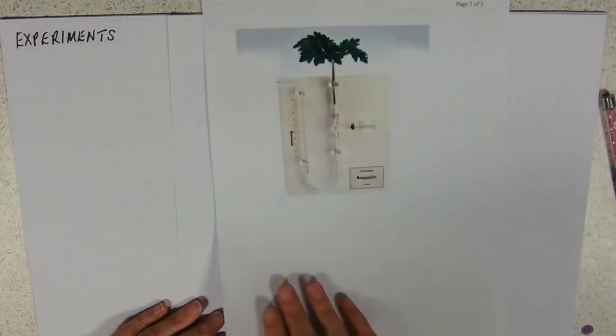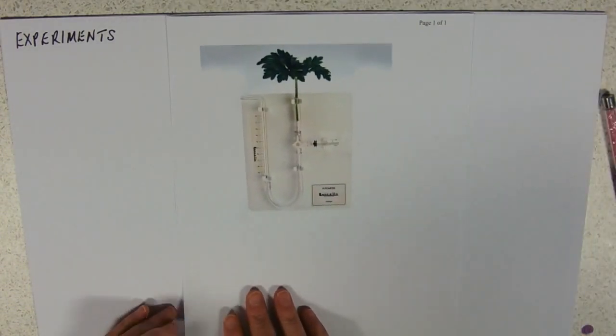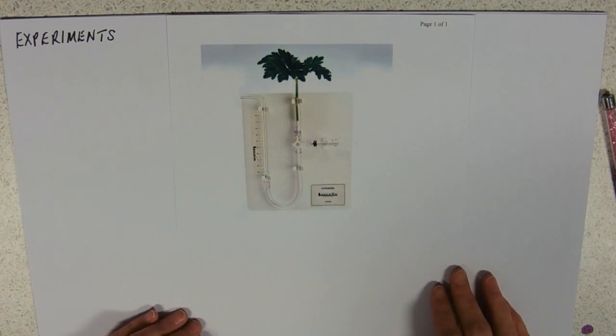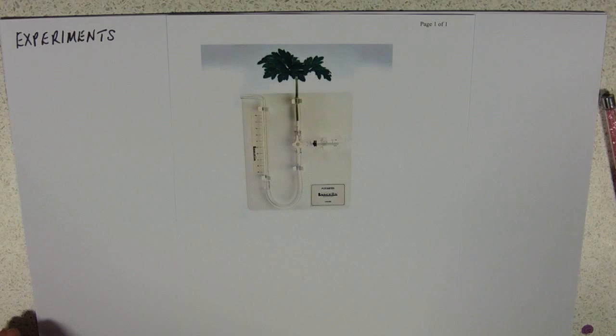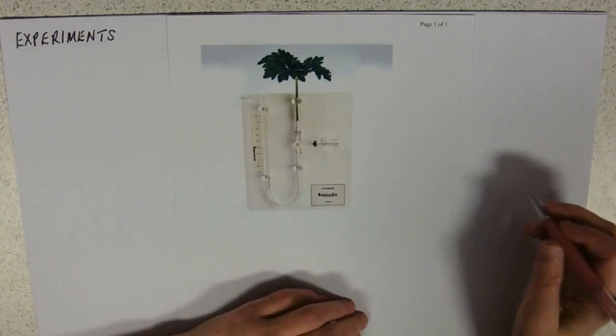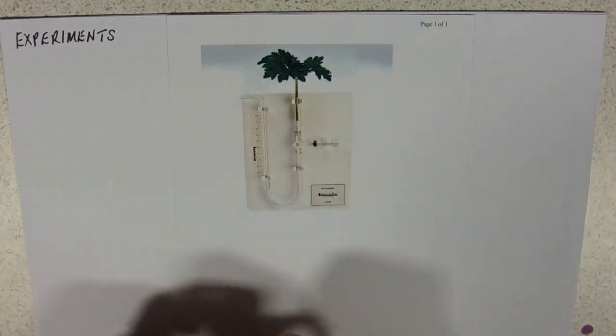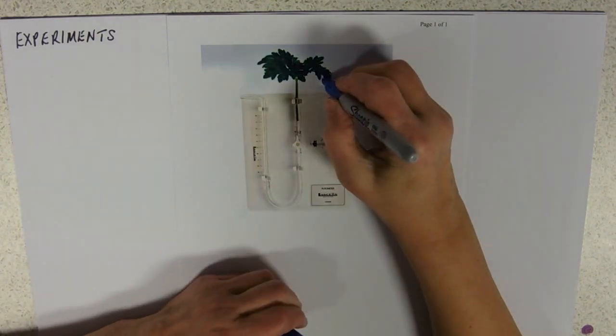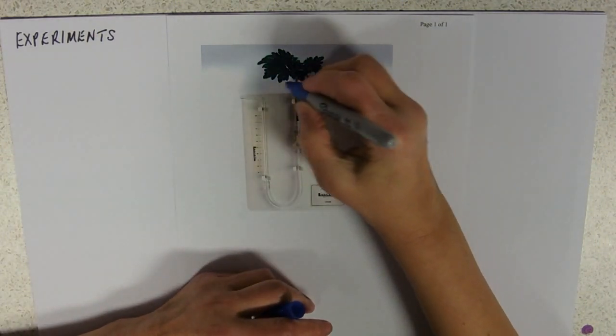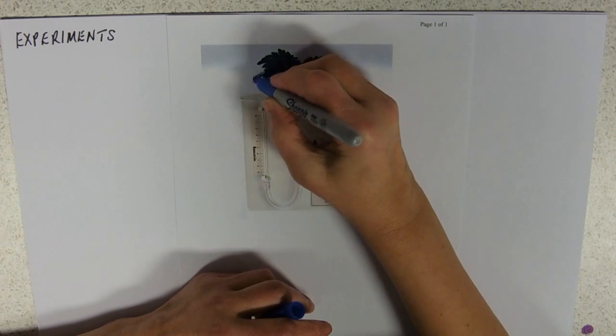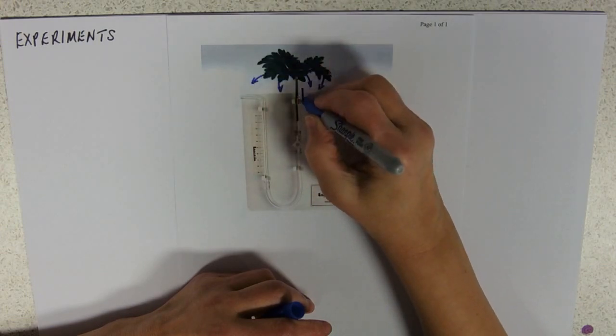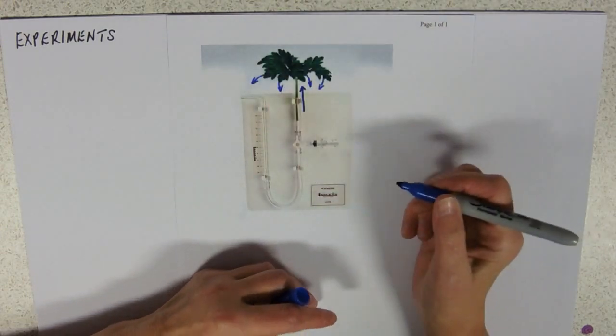And then, of course, we come on to potometers. And this is the experiment that you did. And this is our picture of our bubble potometer. So, up here, we've got the plant, which, of course, is losing water.